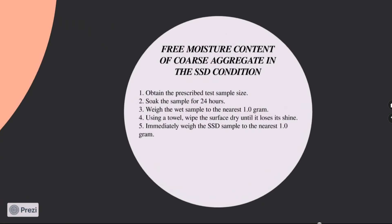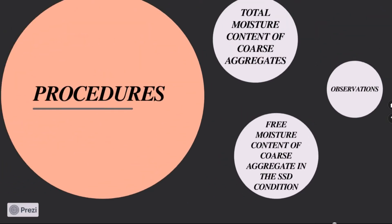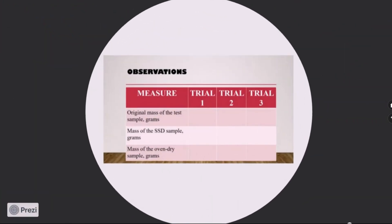In free moisture content, we have five steps. First, we must also obtain the prescribed test sample size. Then, soak the sample for 24 hours. Next, weigh the wet sample to the nearest 1 gram and avoid moisture loss. Using a towel, wipe the surface dry until it loses its shine and immediately weigh the saturated surface dry sample to the nearest 1 gram. According to your observations, fill the data needed in the table.